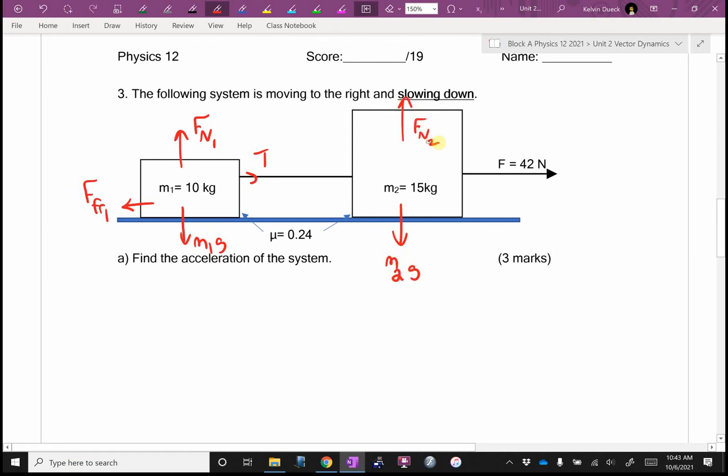M2G, normal force number 2, F applied, tension. Did I miss one? I wrote friction already. Oh, there's friction on both of these. Okay. Who's winning? Left, the frictions are. Anything to the left is going to be winner plus. So my equation is going to look like this. Friction force number 1 minus tension plus tension plus friction force number 2 minus F applied.